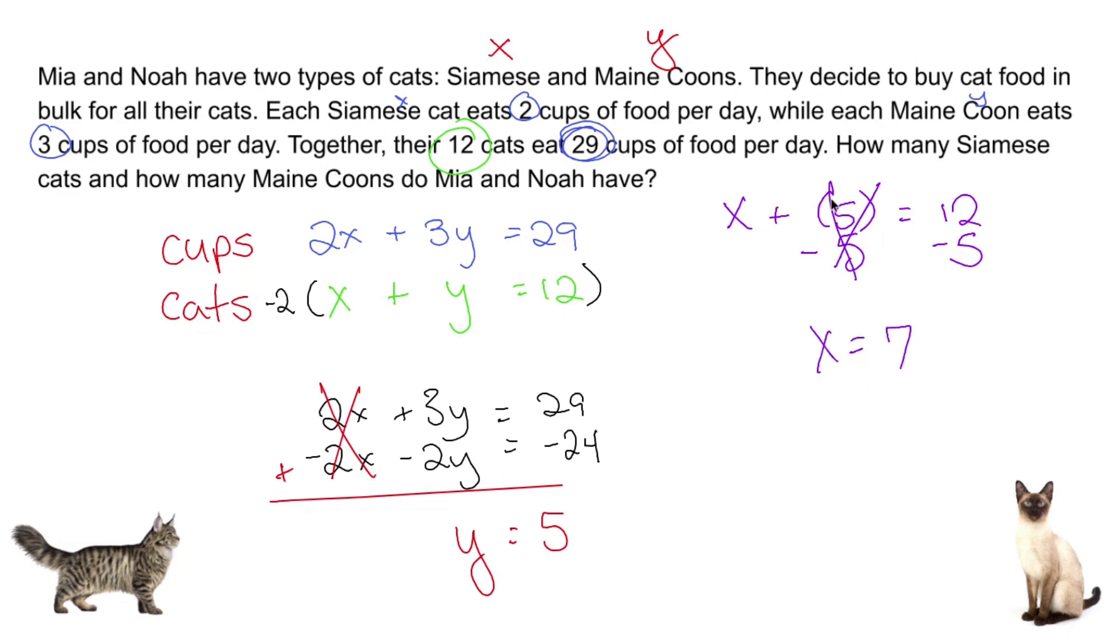Now this is a word problem, so I'm not going to say we have the point (7, 5) and circle that. That doesn't make sense. If someone asks how many cats you have, you're not going to say 7, 5. X here represented Siamese cats, so we're going to say 7 Siamese cats and 5 Maine Coon cats.